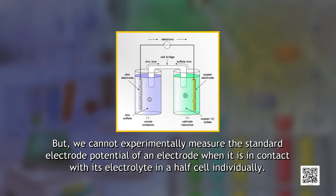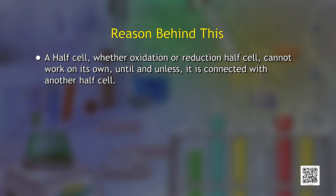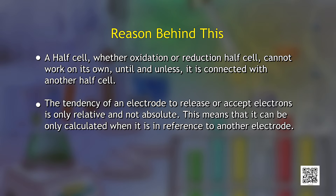We cannot experimentally measure the standard electrode potential of an electrode when it is in contact with its electrolyte in a half cell individually. This is due to two reasons. A half cell, whether oxidation or reduction half cell, cannot work on its own until and unless it is connected with another half cell. The tendency of an electrode to release or accept electrons is only relative and not absolute — it can only be calculated when it is in reference to another electrode.